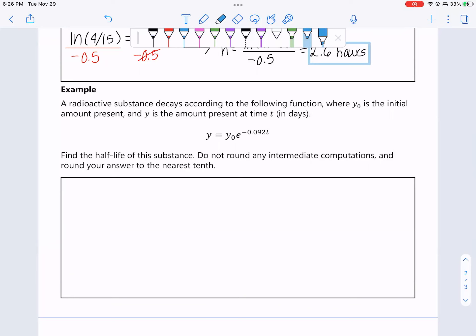I'm ready. A radioactive substance decays according to the following function where Y0 is the initial amount present, and Y is the amount present at time T in days. Find the half-life of the substance, do not round any intermediate computations, round your answer to the nearest tenth. Let me tell you why this is no different than anything we've seen. Our formula that we've talked about for radioactive decay is Pe^rt. Alright, A equals Pe^rt. This formula is Y equals Y0. That's how we say it, Y0. It's Y subscript 0. It means the initial Y amount. Y0, E raised to the negative 0.092 T.